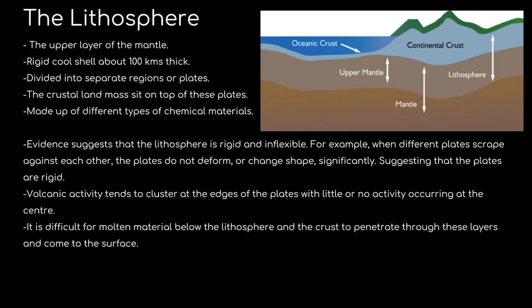Now we have the lithosphere. It is the upper layer of the mantle — a rigid, cool shell about 100 kilometers thick. It is divided into separate regions called plates, which are the tectonic plates that move because of motion in the asthenosphere, the second layer of the mantle. The crustal land masses sit on top of these plates, which are made up of different types of chemical materials. Evidence suggests the lithosphere is rigid and inflexible — when different plates scrape against each other, the plates do not deform or change shape significantly, suggesting they are rigid.